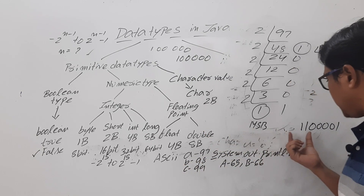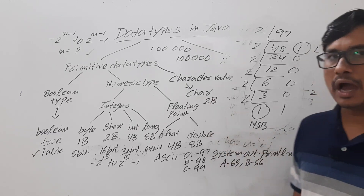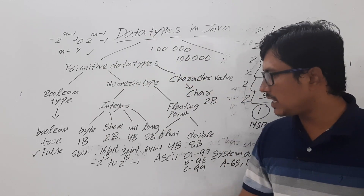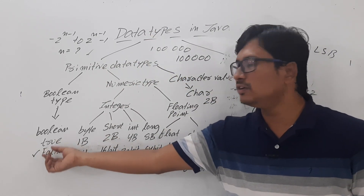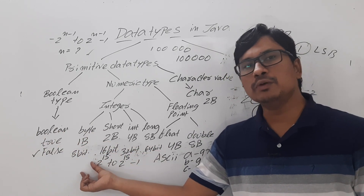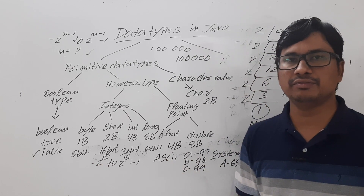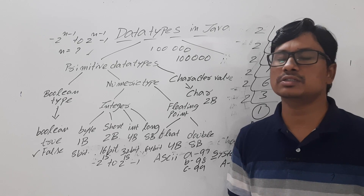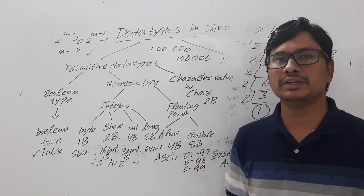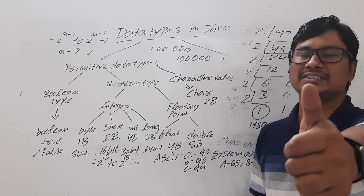I hope you have understood primitive data types, non-primitive data types, the purpose of data types, and the significance of each data type — how much memory each occupies and the range of values they can store. If you still have any doubts related to this concept, feel free to ask in the comment section. I will try to clear your doubts as early as possible. Thank you for watching the complete video. Have a nice day.